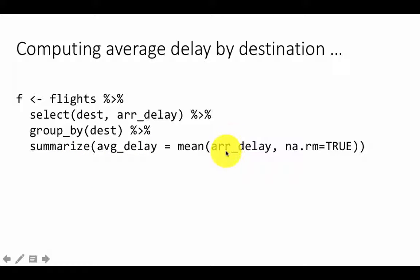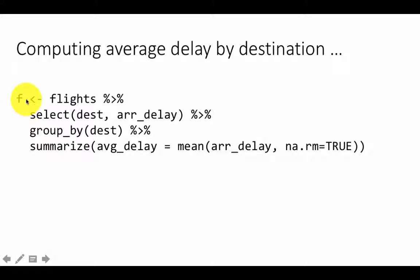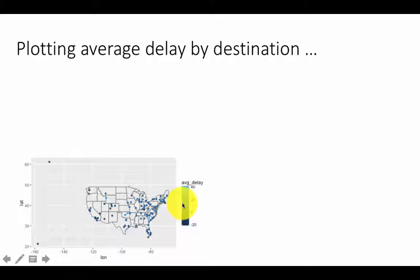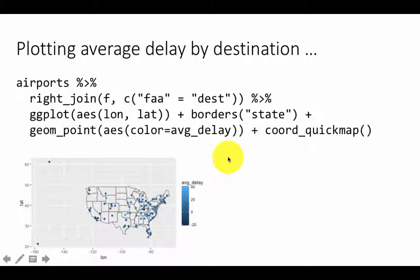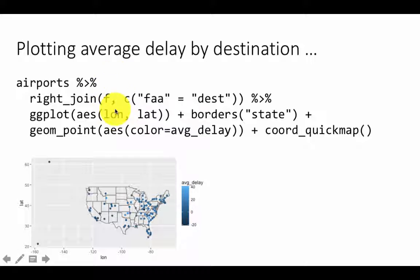Now we are plotting the average arrival delay by destination. Initially I haven't done the filtering for Honolulu and Anchorage. I am saying `airports %>% right_join(F, by = c('faa' = 'destination'))`. F is a summarized data frame — it has one row for every destination and for every destination it has the mean delay. This is much smaller than flights. Then I am making the color a function of the average delay.